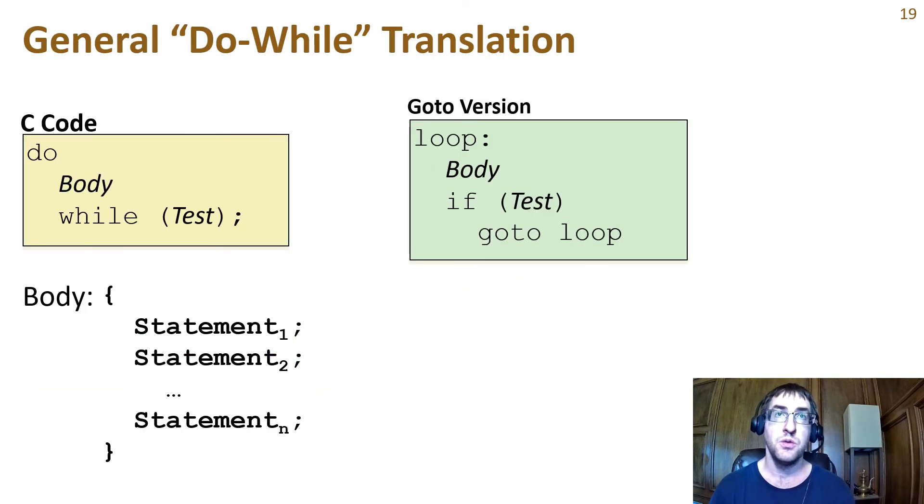So in general, a do-while loop can be converted to this goto version with a label at the start of the loop, the loop body, and then an if of the test that will jump back to the start of the loop body if true. Conversion of this to assembly is relatively straightforward depending on how complex the body and the test are.